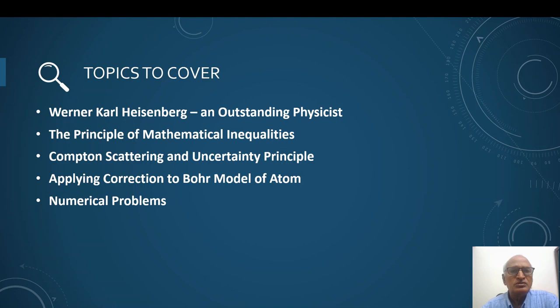The following points will be discussed: about the scientist himself, second, the principle of mathematical inequalities, next, how Compton scattering provides a direct experimental proof of uncertainty principle, and next we will apply this principle to correct the Bohr model of atom, and that will be followed by few numerical problems to verify various concepts.